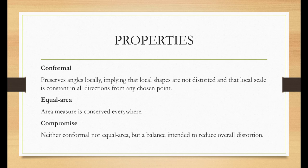The conformal projections preserve angles locally, implying that local shapes are not distorted and that local scale is constant in all directions from any chosen point. In the equal area projection, area measure is conserved everywhere.